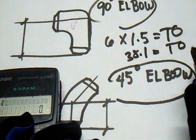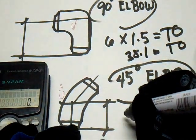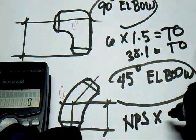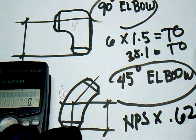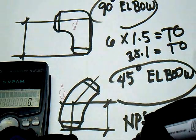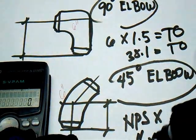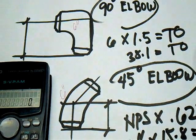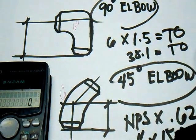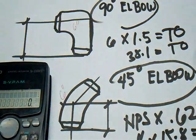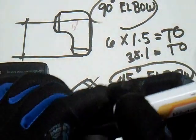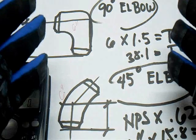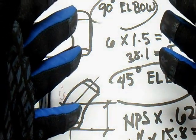For the 45-degree elbow: nominal pipe size (NPS) multiply by 0.625, or 6 inch multiplied by 15.8 mm equals takeoff. Or 6 inch multiplied by 5.8 equals takeoff. That is very easy. So this is all the formulas for the takeoff of the 90-degree and the 45-degree elbow. Thanks for watching, bye!